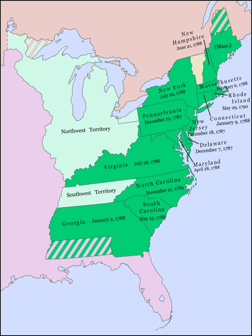After twelve amendments, including the ten in the Bill of Rights, were sent to the states in June 1789, North Carolina ratified the Constitution. Finally, Rhode Island, after having rejected the Constitution in a March 1788 referendum, called a ratifying convention in 1790. Faced with the threat of being treated as a foreign government, it ratified the Constitution by the narrowest margin.